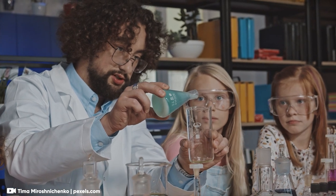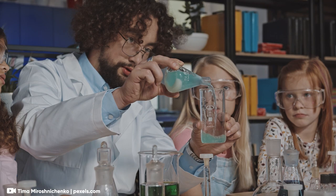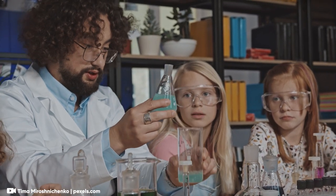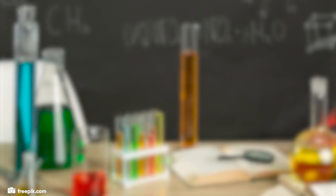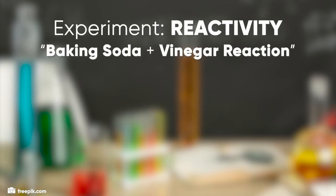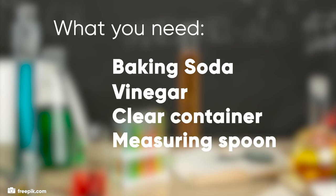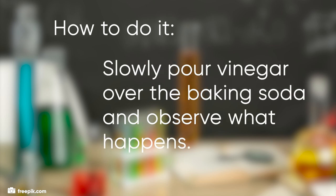We will explore one of these chemical properties with a simple experiment you can try at home or in class. We'll focus on reactivity by observing the reaction between vinegar and baking soda. What you'll need: baking soda, vinegar, a clear container, and measuring spoons. Place a spoonful of baking soda into the container, then slowly pour vinegar over the baking soda and watch what happens.